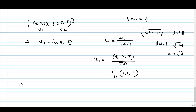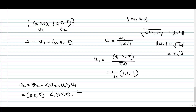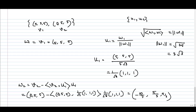Now we have to calculate the second vector w2, which is v2 minus v2·u1 times u1. Our v2 is (0, 5, 5) and we calculate the inner product of (0, 5, 5) with (1/√3)(1, 1, 1), then multiply by (1/√3)(1, 1, 1). If we do the calculation, we get w2 = (-10/3, 5/3, 5/3). This is our new vector w2, and we can verify that w2 is orthogonal to u1.